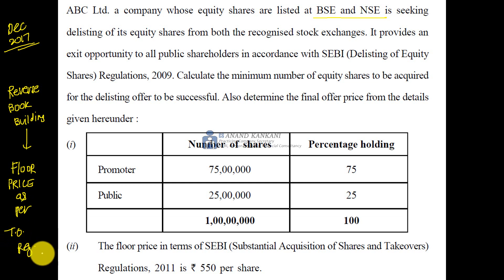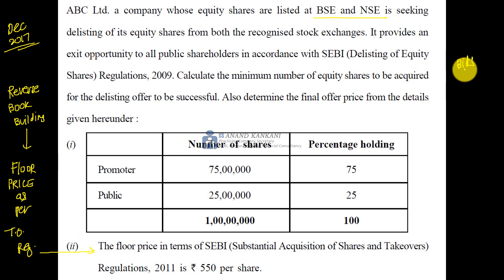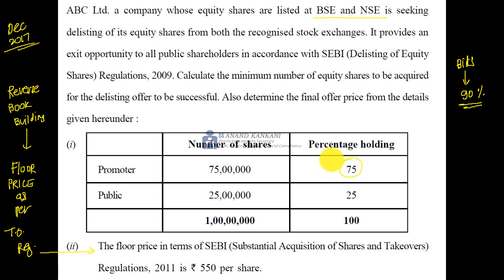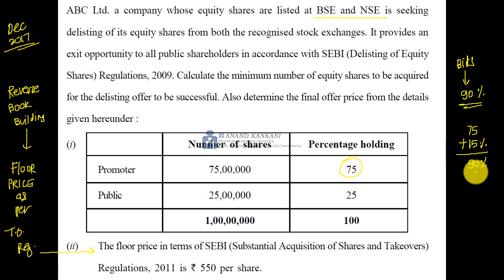Under takeover regulation, Regulation 8, the floor price is based on your closing price. Once the floor price is calculated, you will need bids. Those bids should make the stake of the acquirer or the promoter reach 90%. The promoter already has 75% shareholding — 75 lakh shares — so he needs an additional 15% to bring his holding up to 90%. Which price hits that threshold becomes your final offer price.